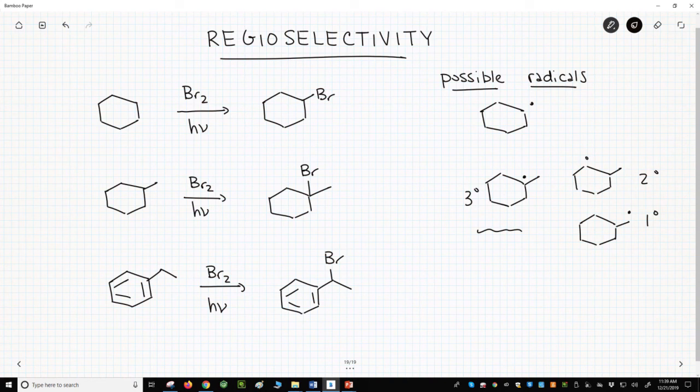This bottom reaction is for ethyl benzene. What's the best possible radical? It's this one. This radical is secondary, and it has resonance.